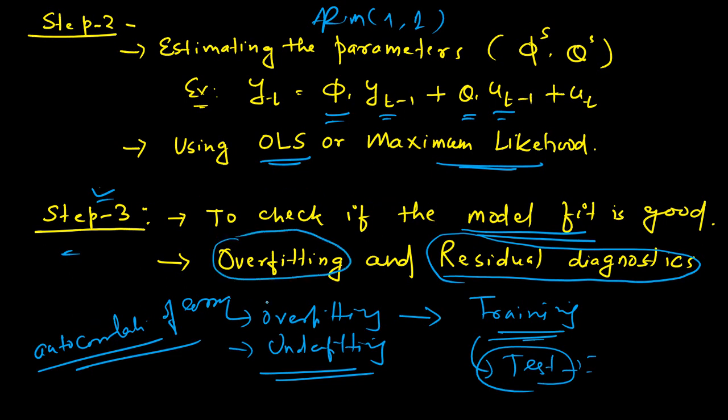That's one way of checking for overfitting. For the residual diagnostics, there are some statistical tests. We will talk about it when we use the Box-Jenkins procedure or approach using some sort of statistical technique. There are statistical techniques available to do the residual diagnostics, and based on the hypothesis used in the statistical test, you will be able to know whether there is a presence of autocorrelation in the residual terms or not.